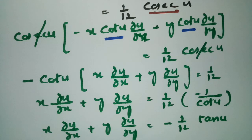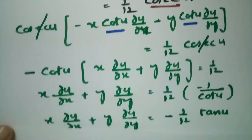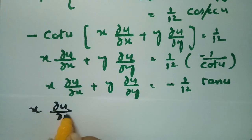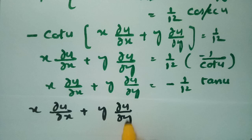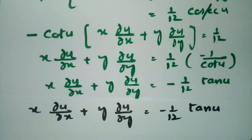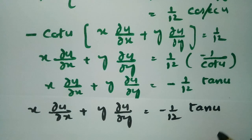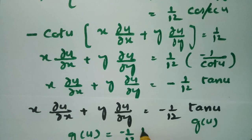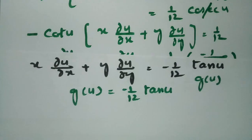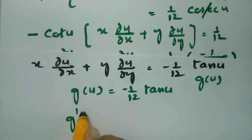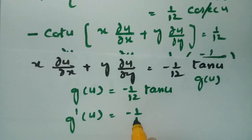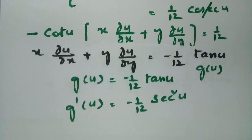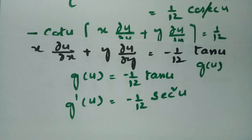For the second-order Euler's theorem, we define g(u) = −(1/12)·tan(u). The derivative is g'(u) = −(1/12)·sec²(u). According to Euler's theorem of second order, we apply the formula using g(u) and g'(u).